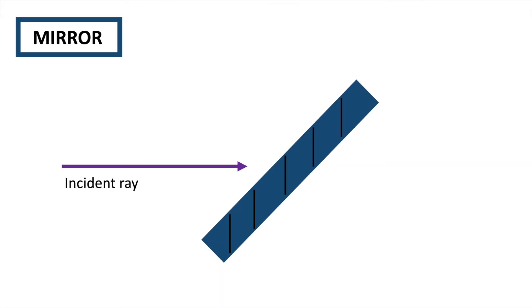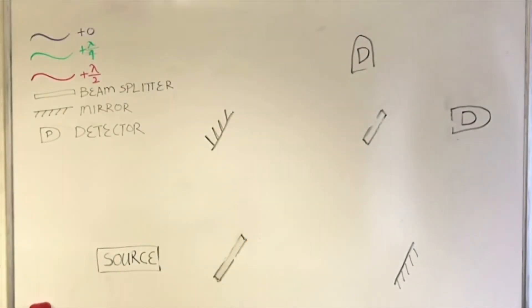Mirrors, on the other hand, only reflect the incident ray with a phase shift of 0. We now have all the tools to look at a simple interferometer.